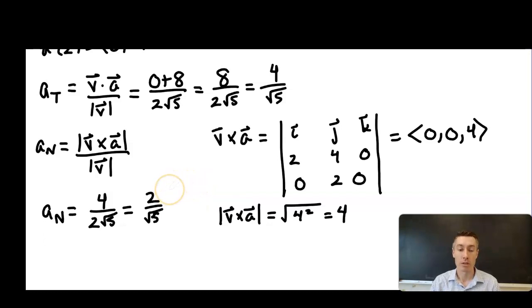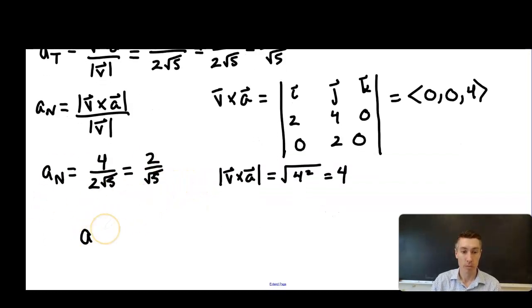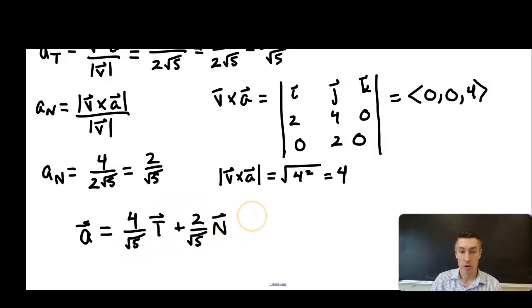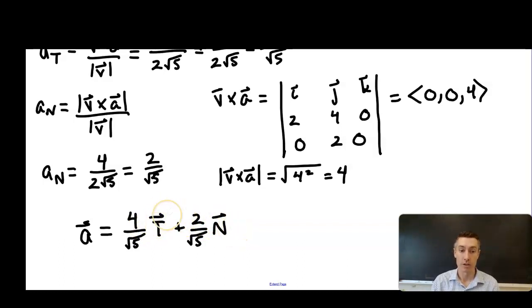These scalar values allow us to write: the acceleration vector equals (4/√5) times the unit tangent vector plus (2/√5) times the unit normal vector. We've expressed acceleration as the sum of two vectors — one tangential and one normal. If we want actual vectors in the sum, we'd have to find the unit tangent and unit normal, but for our purposes we stop here.